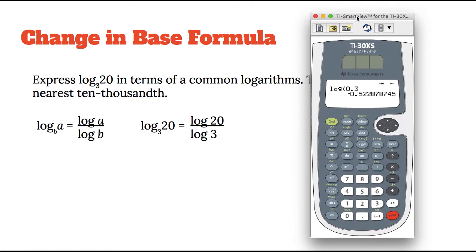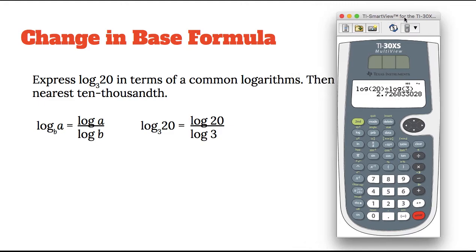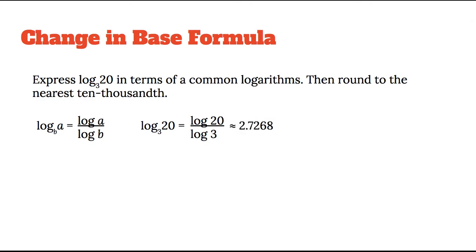If you want to figure out the decimal value, go right to the calculator. Type in log of 20 — you want to close the parenthesis to make sure you're taking the log of 20 — then divide by log of 3. You get a decimal number. The directions say round to the nearest ten-thousandths: tenths, hundredths, thousandths, ten-thousandths. Three doesn't tell me to round the eight up, so the answer is 2.7268.